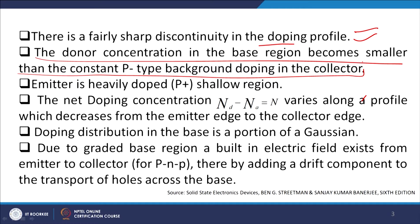As can be seen, there is a fairly sharp discontinuity in the doping profile. Since there is a sudden change at the interface between ND and NA, there is a sharp change. The donor concentration in the base region becomes smaller than the constant P-type background doping in the collector. This is a P+NP structure — the donor concentration in the base region is slightly higher giving the N region, while the emitter is a heavily doped, shallow P+ region.